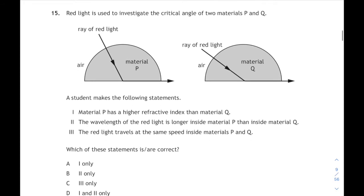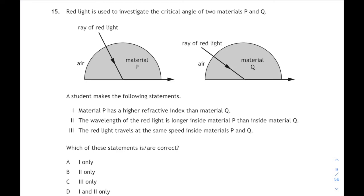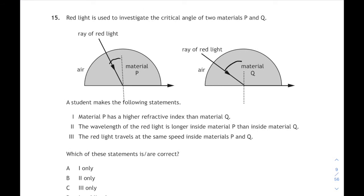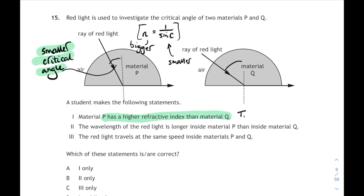Question 15. Red light is used to investigate the critical angle of two materials P and Q. I'm going to add two normals to these diagrams. Both of those rays in glass are producing rays in air that are refracted at 90 degrees. So these are the critical angles of both those materials. And that critical angle is smaller in material P. Remember, the critical angle in glass is the angle at which the refracted ray is at 90 degrees to the normal. Now, we've got a relationship to help us here. It's N equals 1 over sin C. If we have a smaller critical angle, it means we're going to have a bigger refractive index. So P has got a higher refractive index than Q. So statement 1 is true.